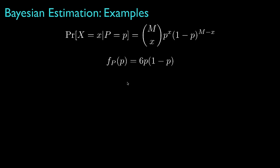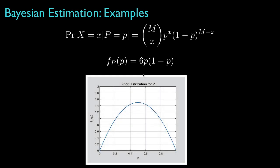Furthermore, let's assume that the success probability is an unknown random parameter that has a probability distribution over the interval between 0 and 1. This particular distribution is an example of the beta distribution, and our prior model for the success probability is such that we believe it is more likely to be near one-half than near 0 or 1. If this example corresponded to several tosses of a coin, this prior corresponds to a model in which we believe it is more likely for the coin to be fair than unfair.